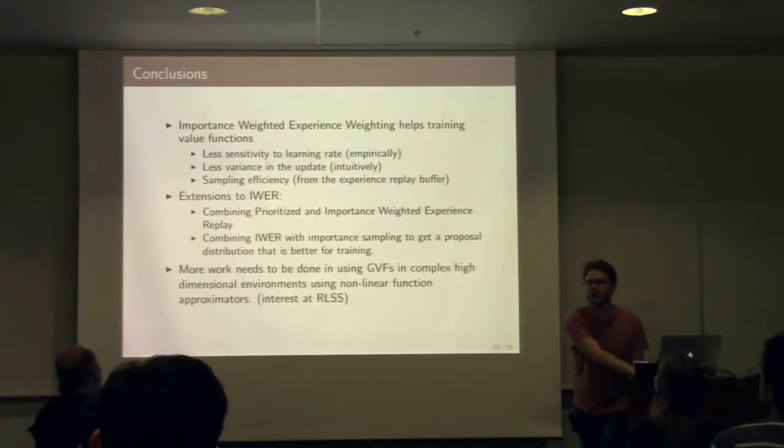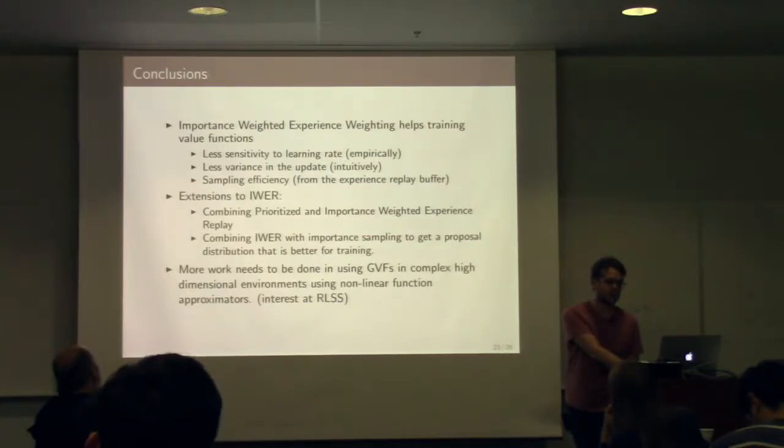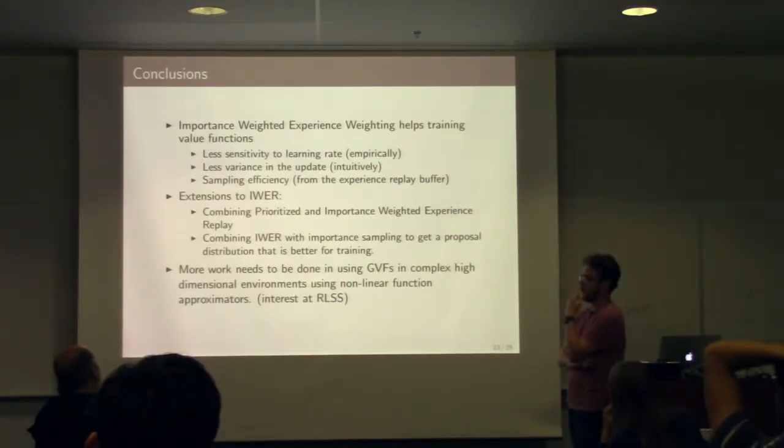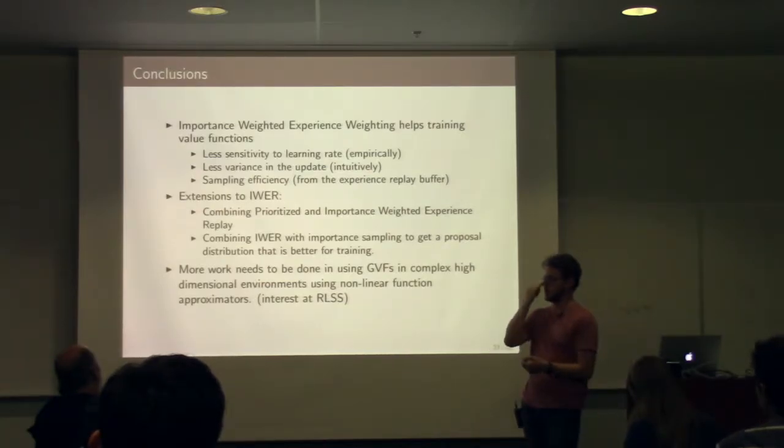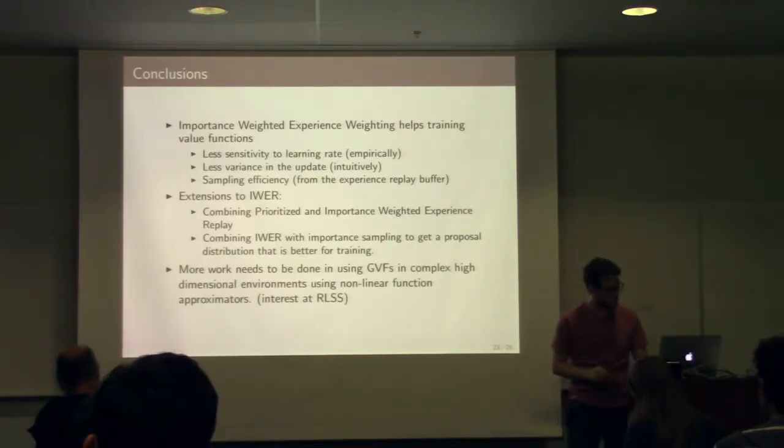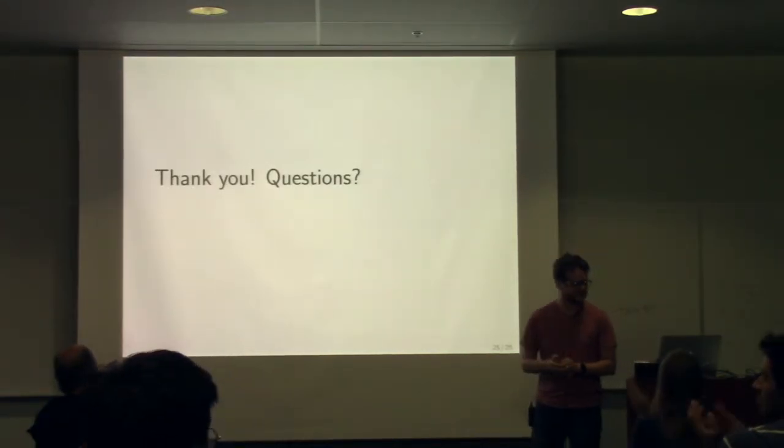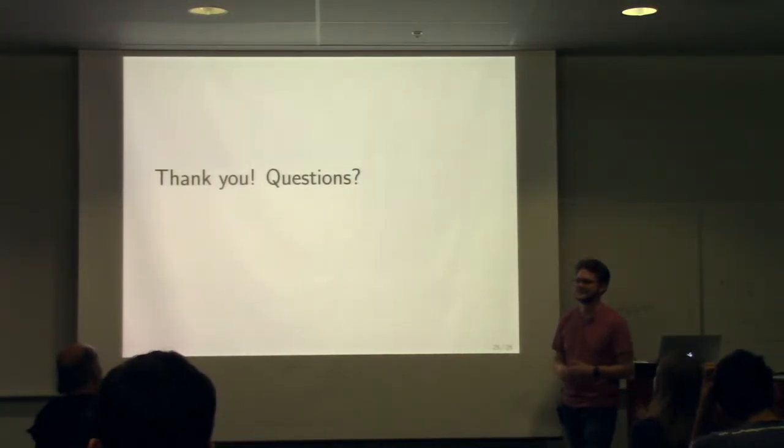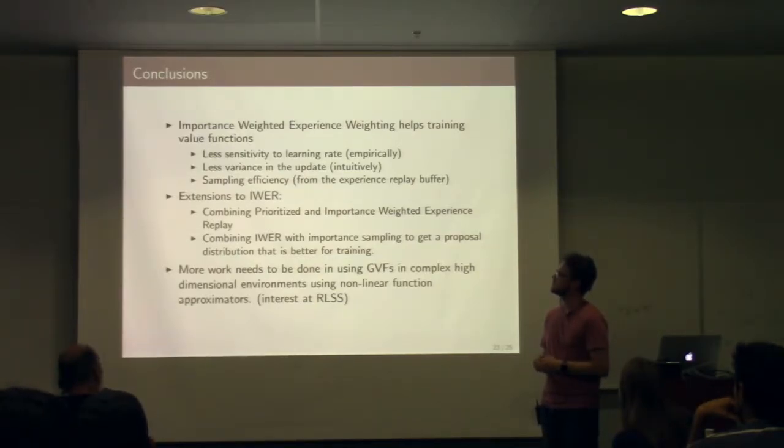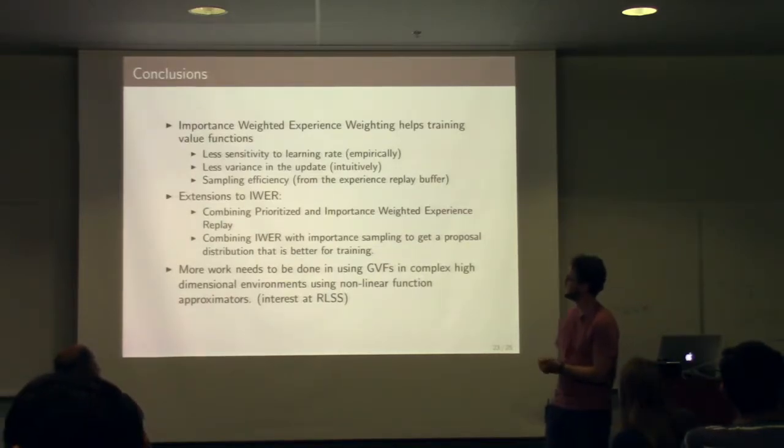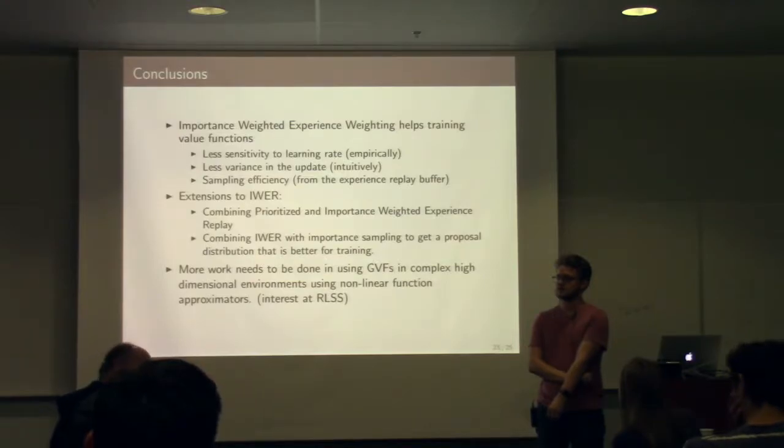One of the things that I'm interested in looking at is can we, instead of sampling based off of our target policy, can we select another policy that's nicer to sample off of? Still use importance sampling ratios, but have this adaptive importance sampling type algorithm. Cool. All right. Thank you. Roll back to the conclusion so we can. Yeah.